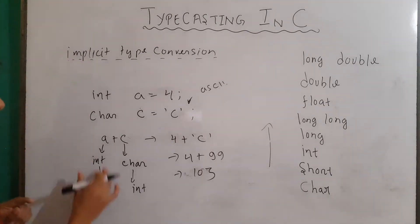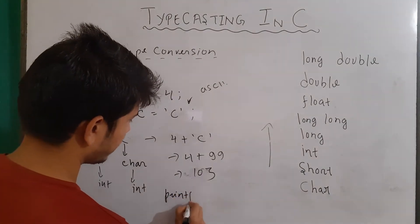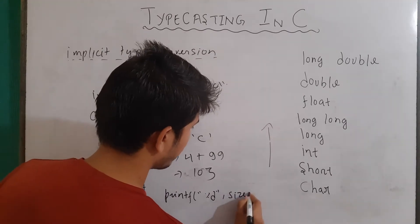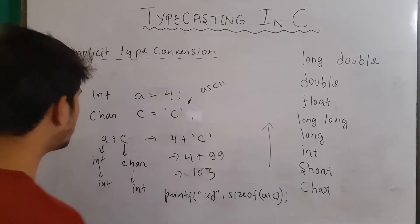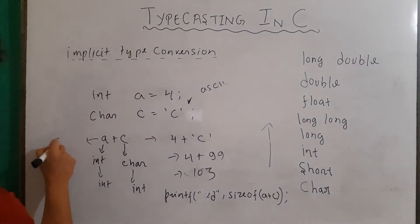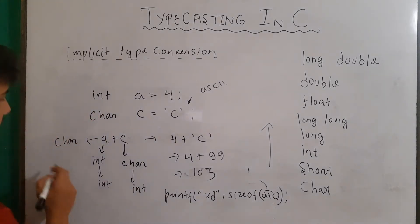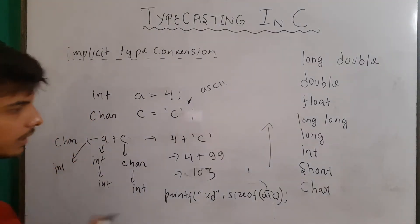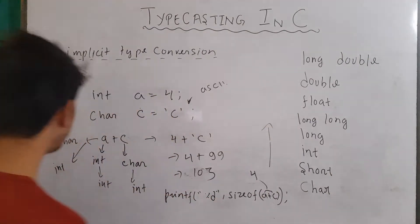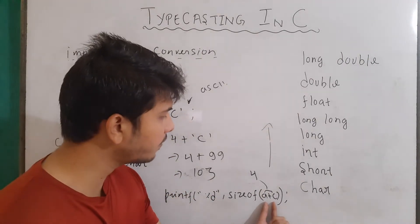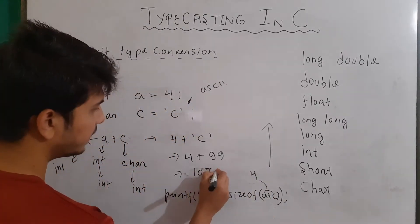To prove that the character is converted to integer type, we can write printf with %d and sizeof(a + c). If the result is of character type, sizeof will give 1; if it is integer, it will give 4. When you run this program, sizeof gives 4, confirming the final output is of integer type.